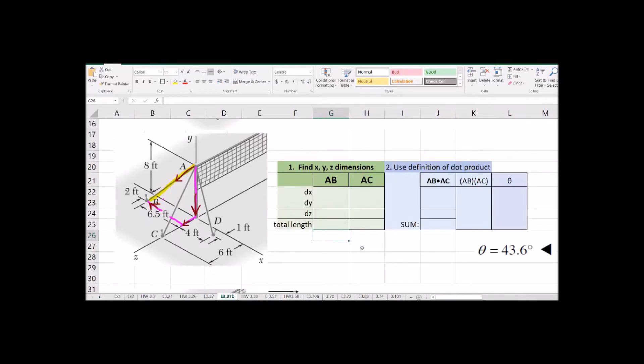Go ahead and try these out in Excel. There's a column for each of the wires. Fill in the lengths of those wires, dx, dy, dz. The total length, use the square root function. So just A squared plus B squared plus C squared to get the overall length of that cable.